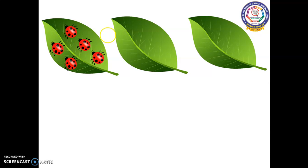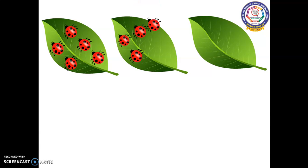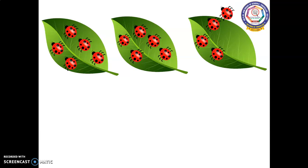Now we will move on to the second leaf. One, two, three, four, five — in the second leaf we have five ladybugs. Now the final third leaf — one, two, three, four, and five — there are five ladybugs on the third leaf.